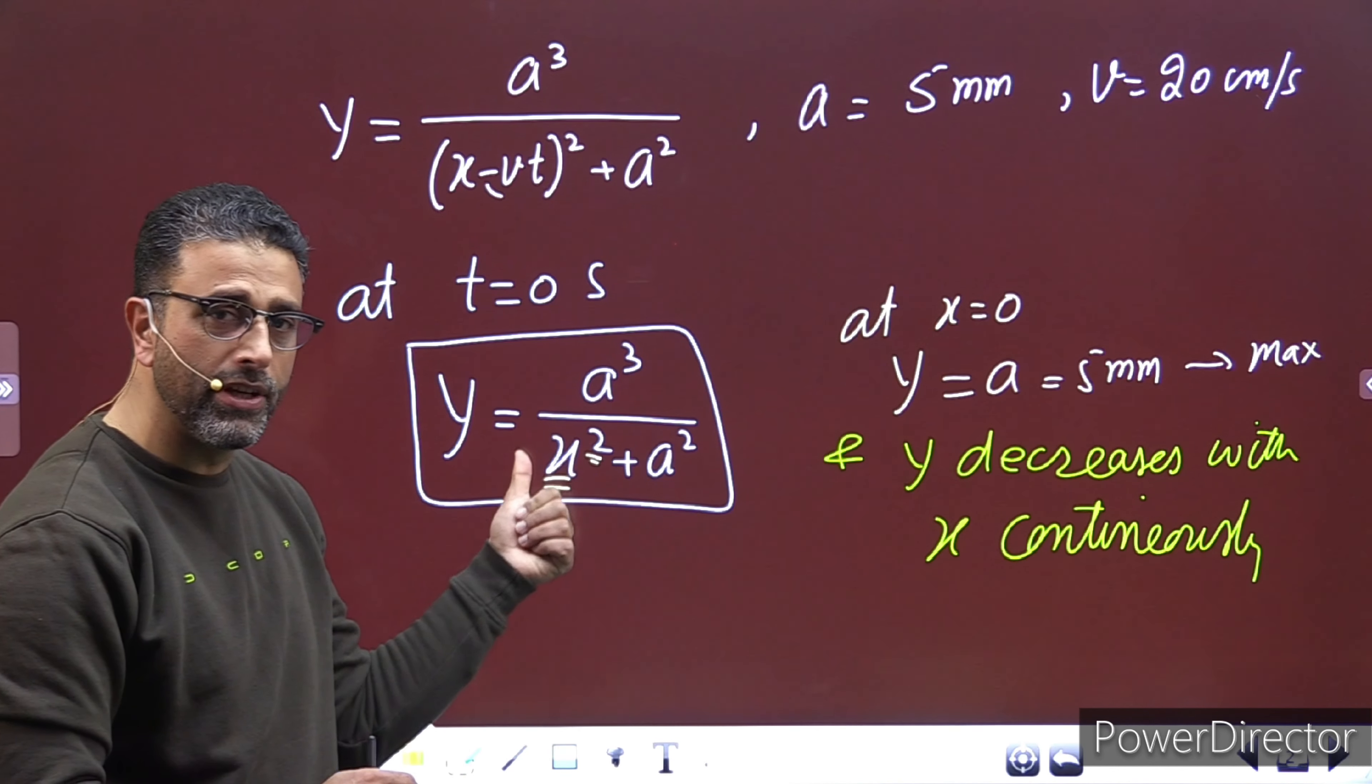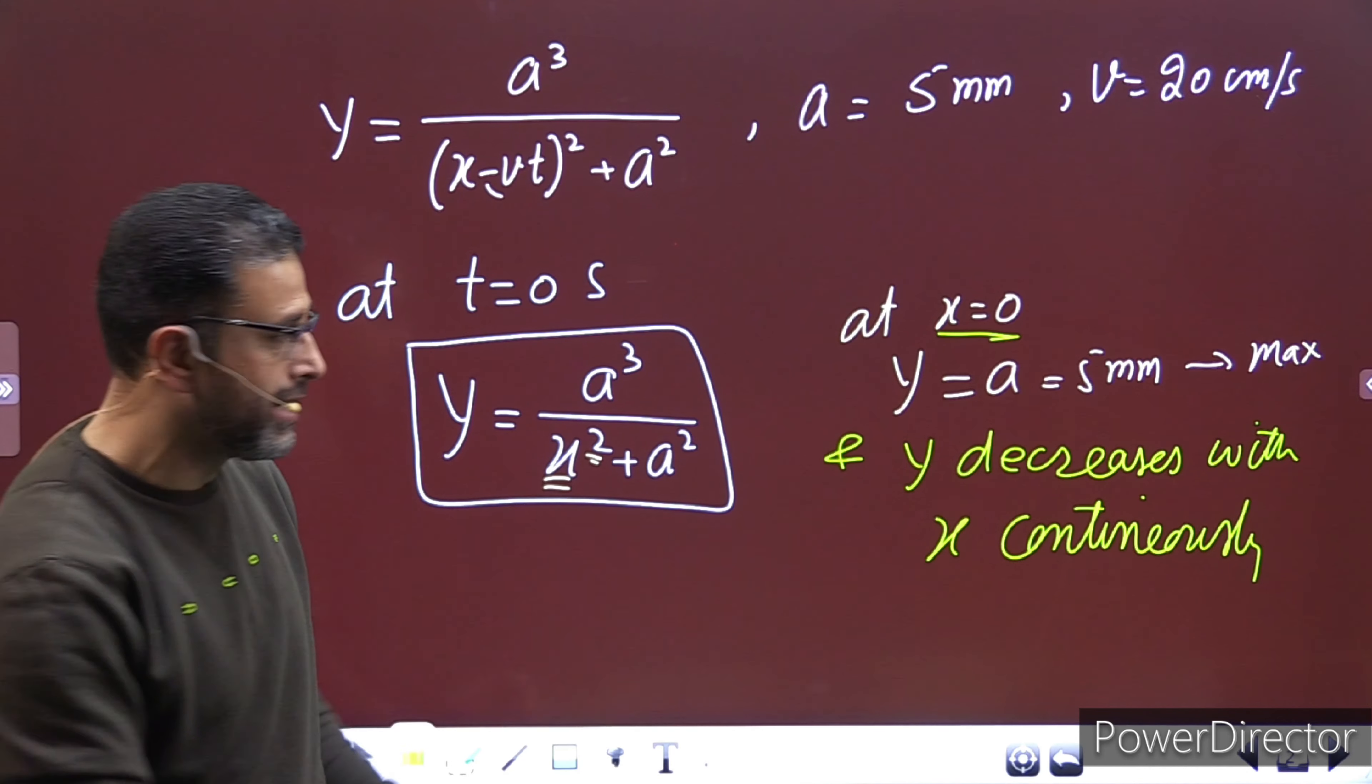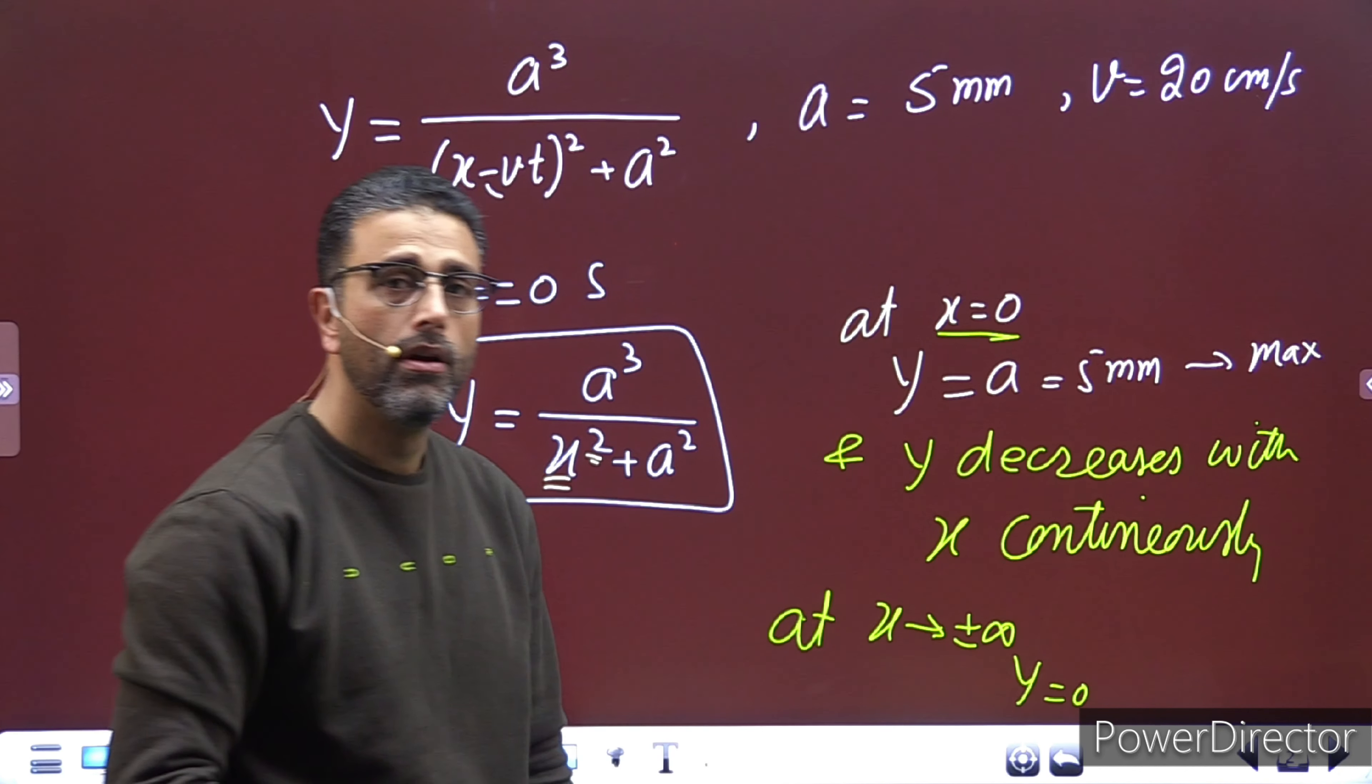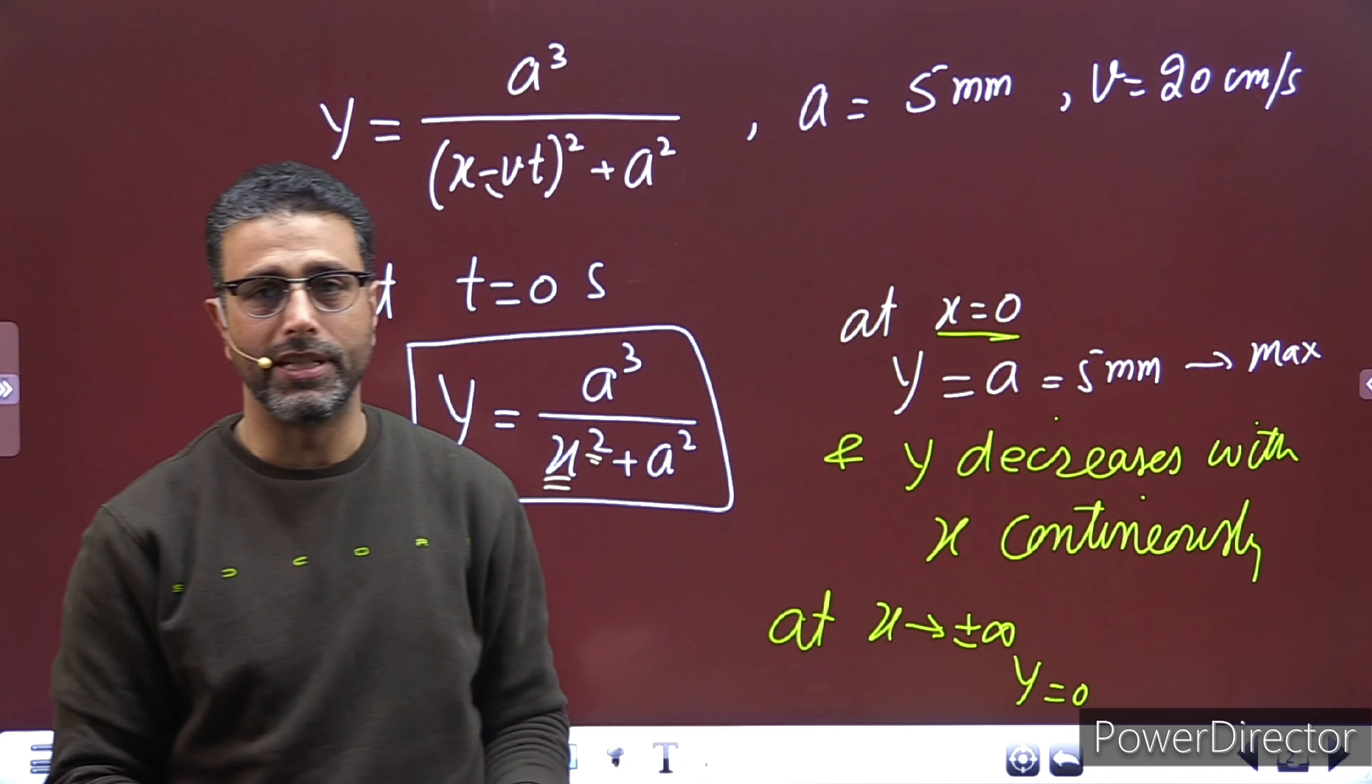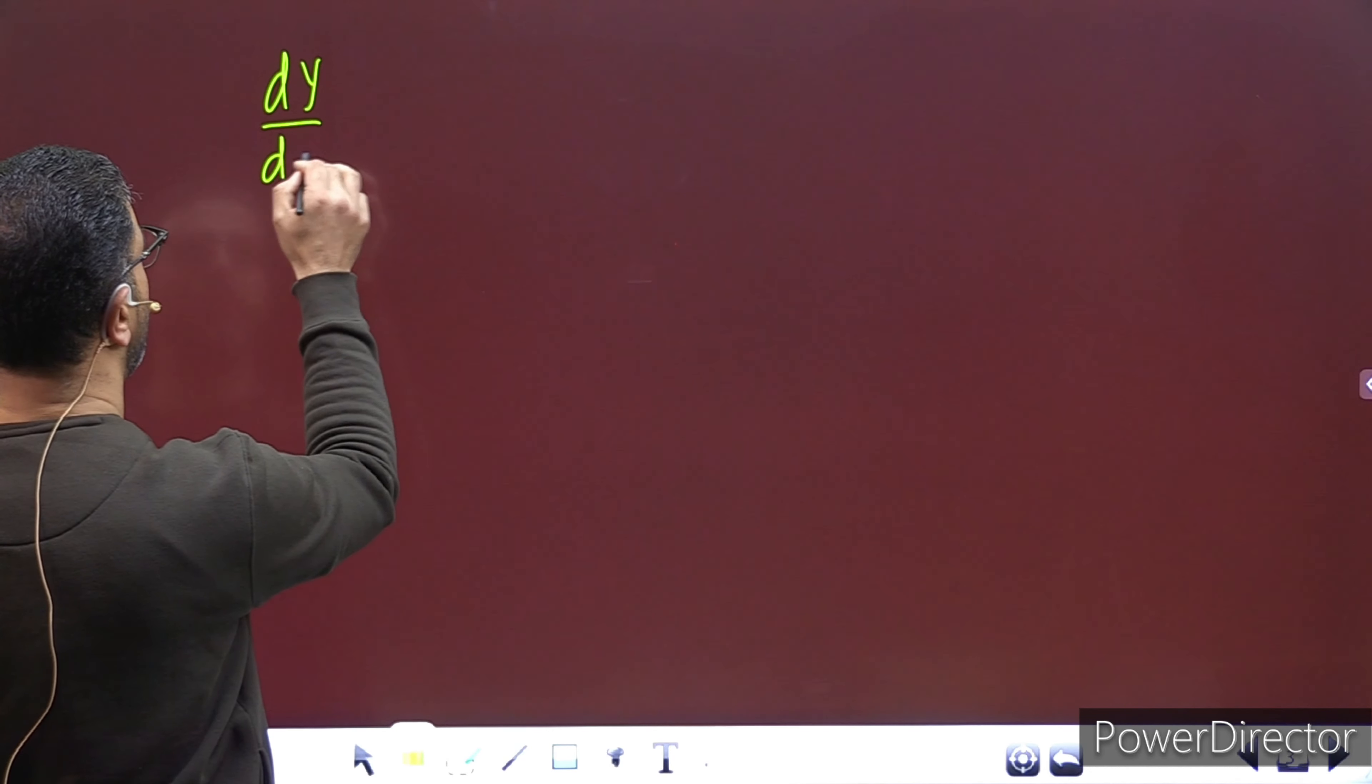Y will decrease. So this value of y is maximum. And y decreases with x continuously, continuously, irrespective of whether x is positive or negative. Positive or negative makes no difference because x square is involved here. And it will continuously decrease. This is also important. It will continuously decrease, because however much you increase x square, y has to decrease only. From x equal zero onwards, x square has to increase only. So y will only decrease, continuously. And at extending to plus minus infinity, y becomes zero.